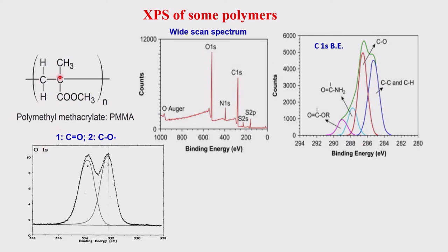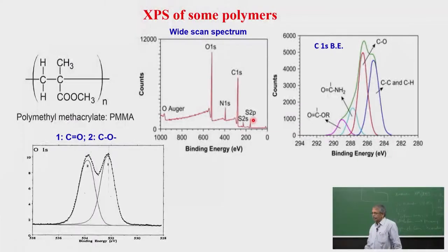Here is an example of the polymer polymethyl methacrylate. If you look at the formula, it has only certain carbon types. But in the wide spectrum you find not only carbon, nitrogen, and oxygen peaks, but also a sulfur peak — because when making this polymer, some sulfur-based material must have been used. So even minute surface impurities will appear. The wide scan spectrum shows everything present at the surface, not just what the formula predicts.